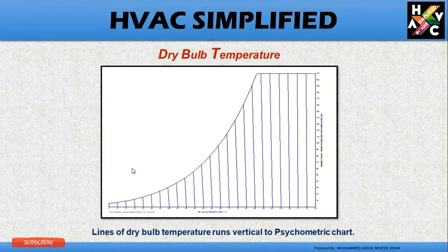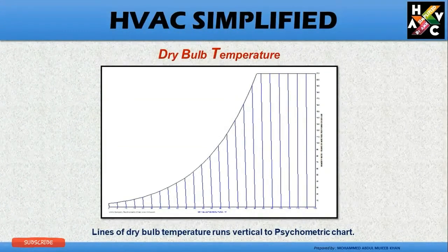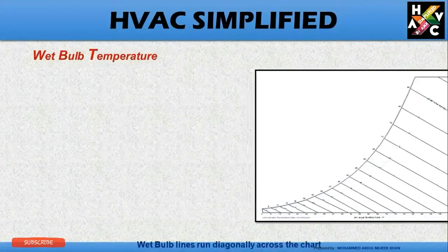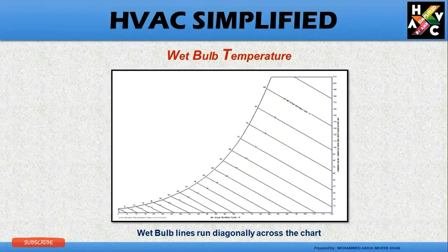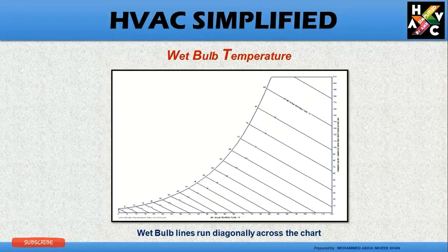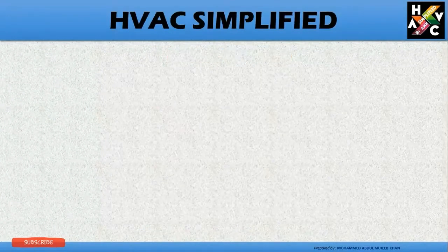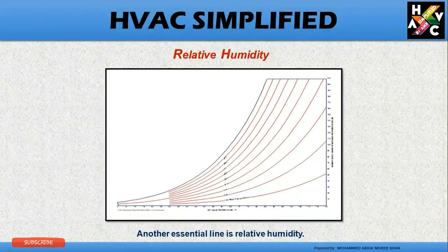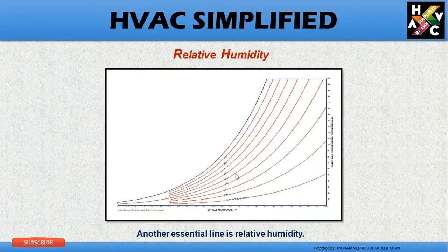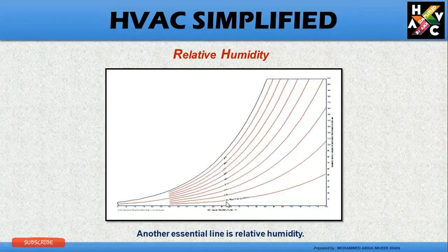Temperature. Dry bulb temperature lines run vertical to the psychrometric chart. Wet bulb temperature lines run diagonally across the chart. Relative humidity. Another essential line is relative humidity which is an arc line on the represented psychrometric chart where you can find the relative humidity in percentages.